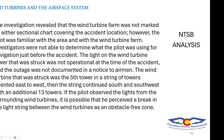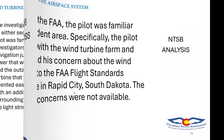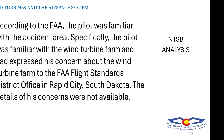The wind turbine struck was the fifth tower in a string oriented east to west, with 13 additional towers continuing south and southwest. If the pilot observed lights from surrounding turbines, it's possible he perceived a break in the light string as an obstacle-free zone — he may have seen lights on towers to his left but not in front of him, thinking there were no towers there. According to the FAA, the pilot had expressed concerns about the wind turbine farm to the FAA Flight Standards District Office in Rapid City, South Dakota, though the details of those concerns were not available.